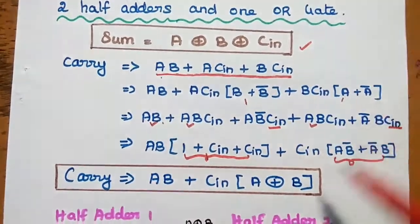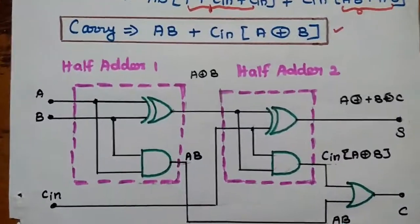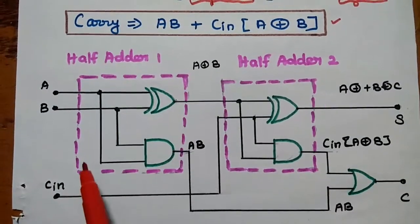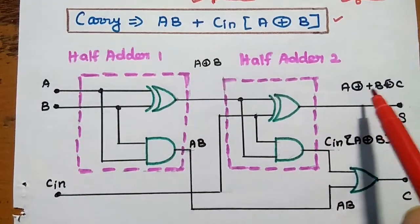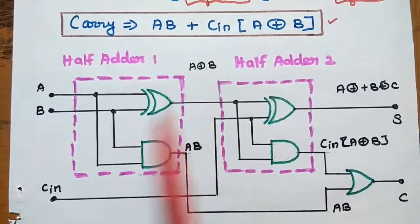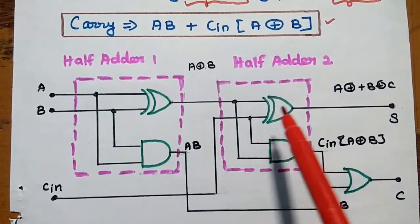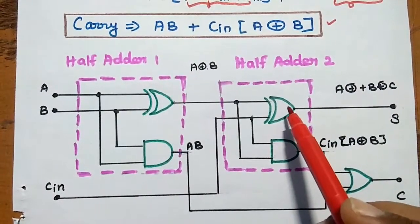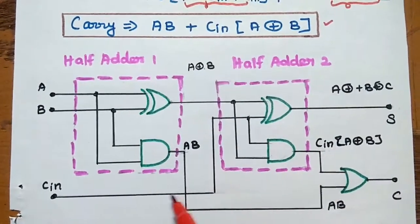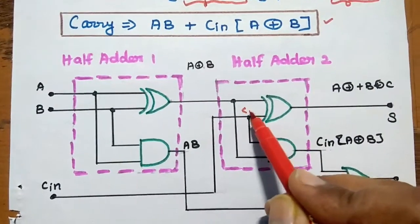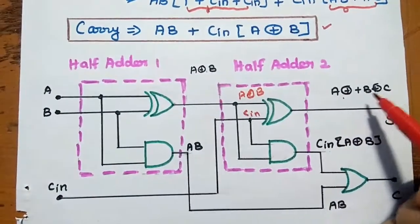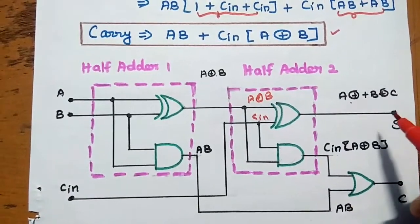For these two expressions, we are going to draw the full adder circuit. Inputs A and B are given to one XOR gate, and the output is A XOR B. Then C is given as input to a second XOR gate, where one input is A XOR B from the first gate and the second input is Cin. So finally we obtain A XOR B XOR C — that is the value of sum.